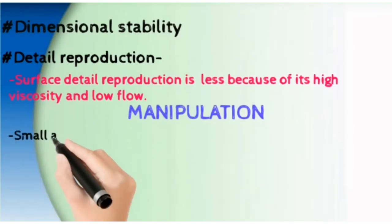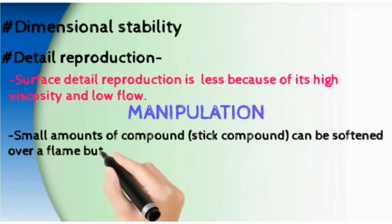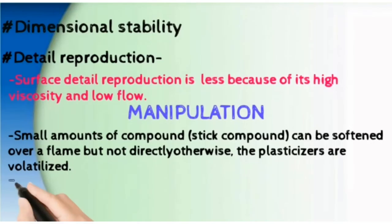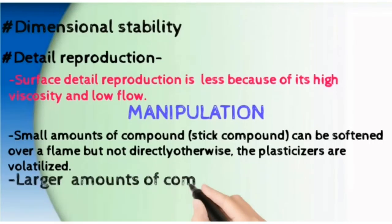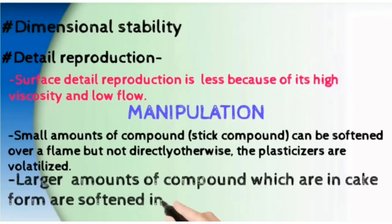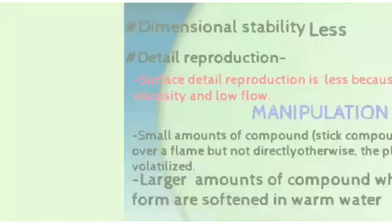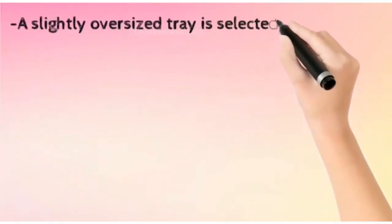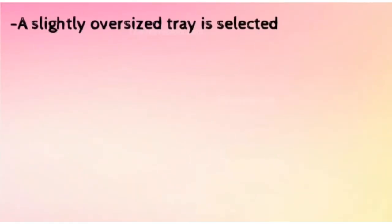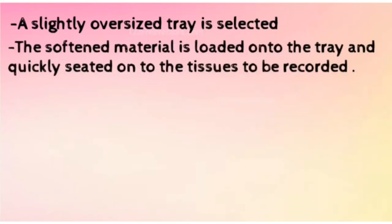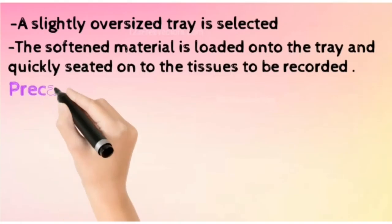Regarding manipulation: stick compound can be softened over a flame but not directly, as the plasticizers get volatilized. Larger amounts in cake form should be softened in warm water. A slightly oversize tray is always selected, the softened material is loaded onto the tray, and quickly seated onto the tissues to be recorded.